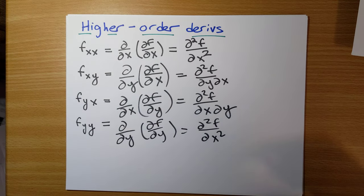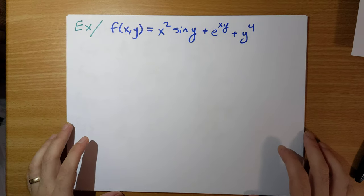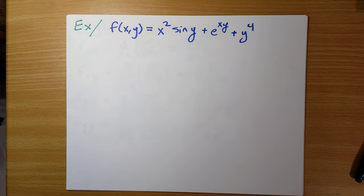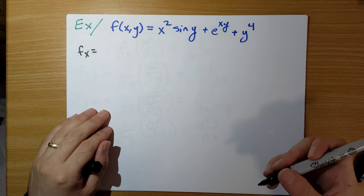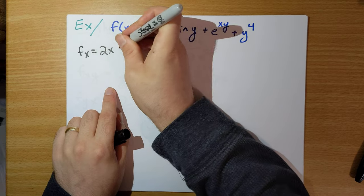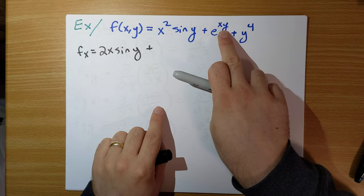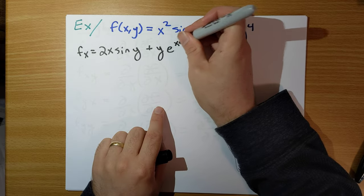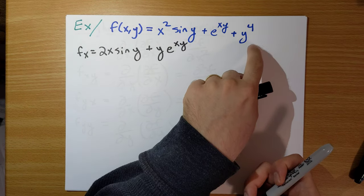This is how we do second derivatives. Later in this video I'll be talking about third, fourth, and higher order derivatives. Let's crunch out an example. f(x, y) = x² sin(y) + e^(xy) + y⁴. Let's start by calculating the first partial derivatives. The x partial derivative would be 2x sin(y), plus — since y looks like a constant — y·e^(xy), and then y⁴ gives zero with respect to x.